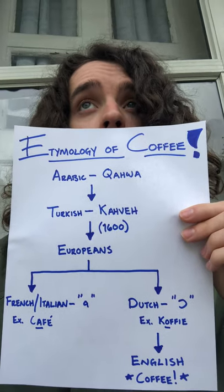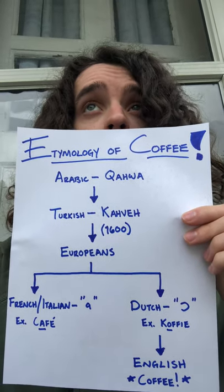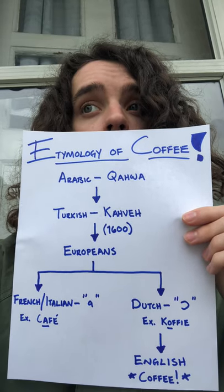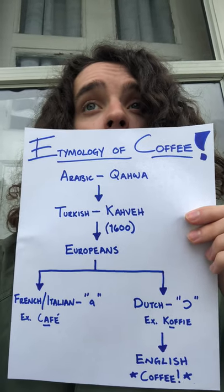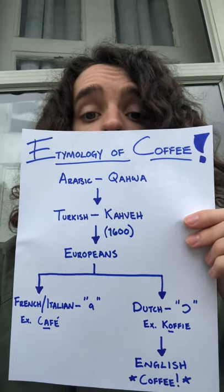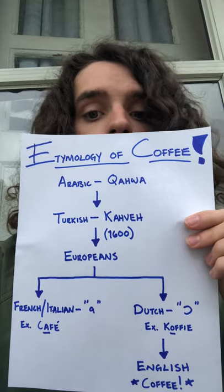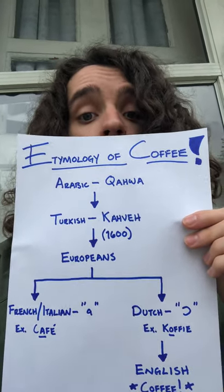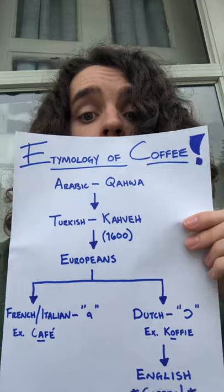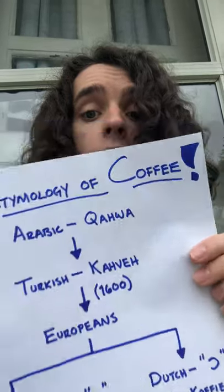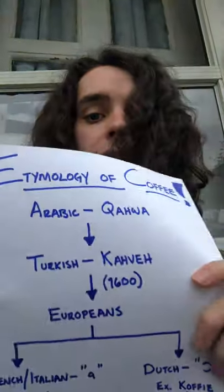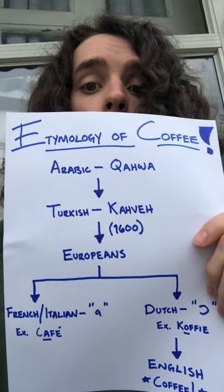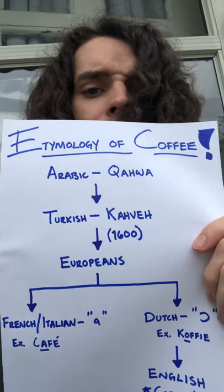Using that as a primary resource and going through some other resources, this is the information I feel is the most accurate. So let's get started. The origin of the word coffee stems from Arabic — the wind is not going to be my friend today — it stems from Arabic, which is 'qahwa.' I YouTubed how to pronounce this word, coffee in Arabic, so I'm sorry if I absolutely butchered that, but I tried my best.